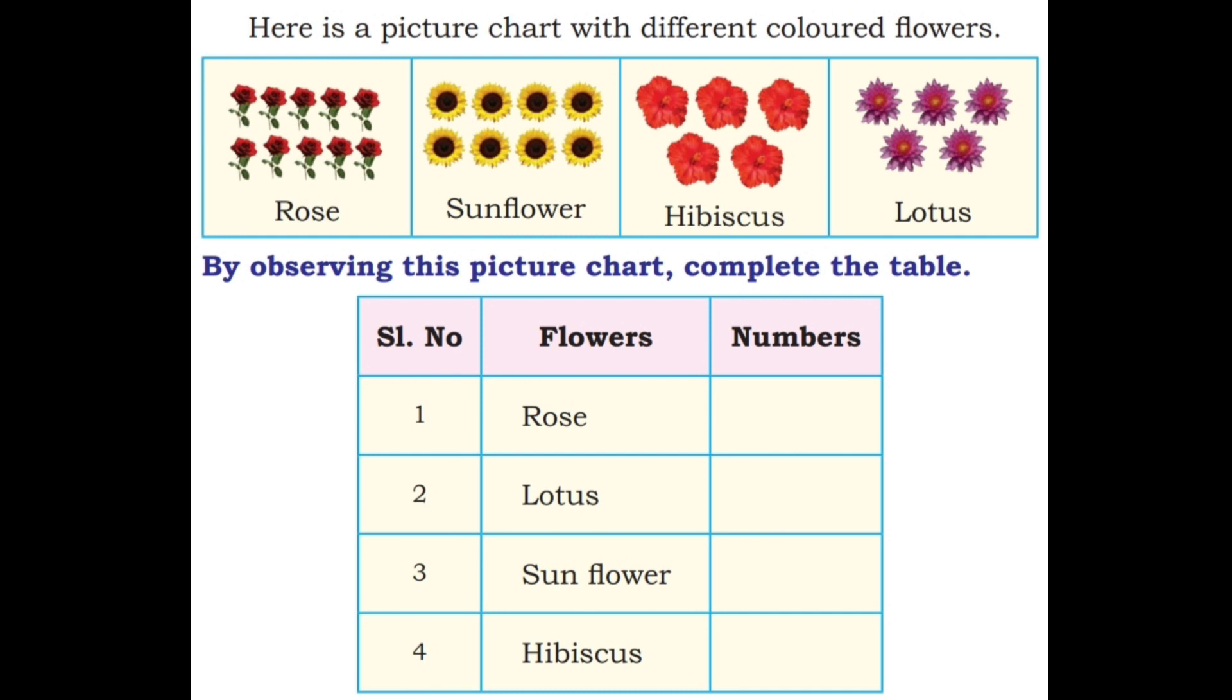In the table we have serial number, flowers, and numbers. Rose, lotus, sunflower and hibiscus. Count the flowers and write the numbers. Rose is 10, lotus 5, sunflower 8, hibiscus 5. Count the flowers and write them in the table.